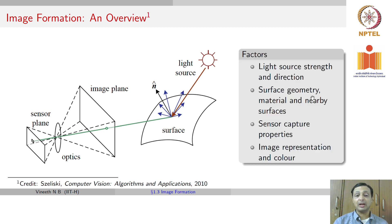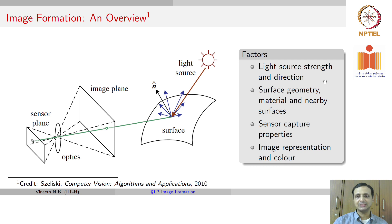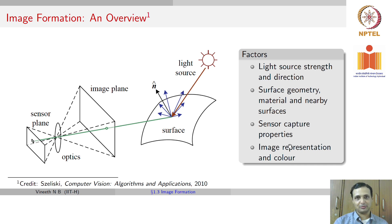The factors that affect image formation are the light source strength and direction, the surface geometry, material of the surface such as its texture, as well as other nearby surfaces whose light could get reflected onto the surface. The sensor capture properties — we will talk more about that as we go — and the image representation and color space itself. We will talk about some of these as we go.